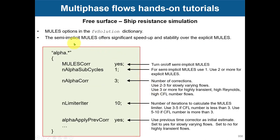In fvSolution you can select the semi-implicit approach. You can do sub-cycles when solving the alpha equation. The values shown here are the recommended ones — there are comments provided. Do not increase them too much.